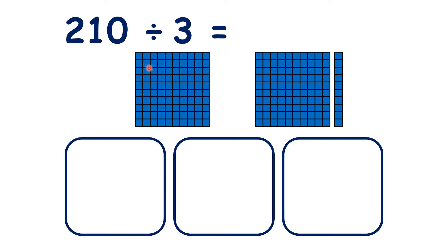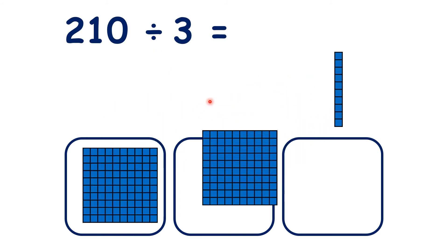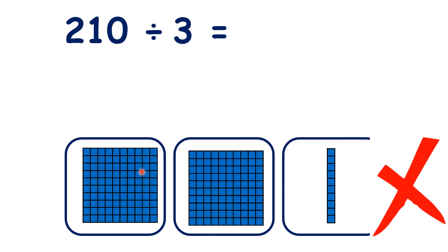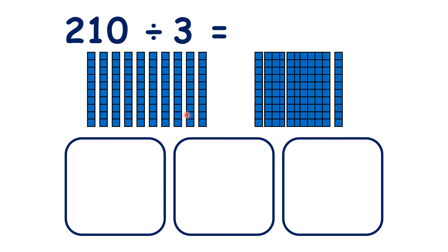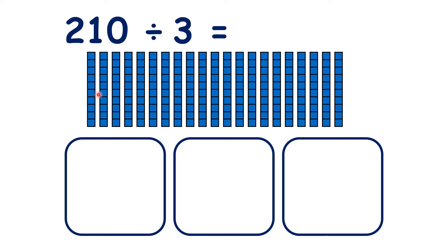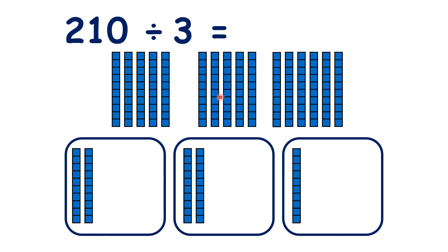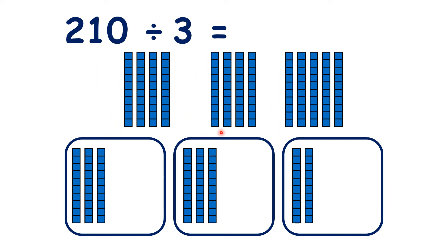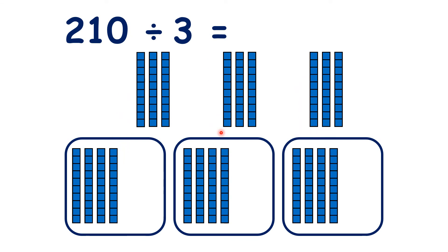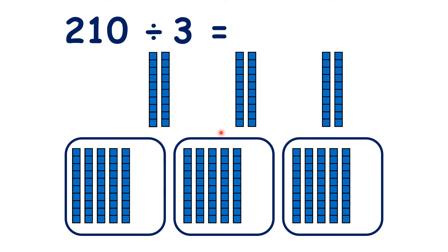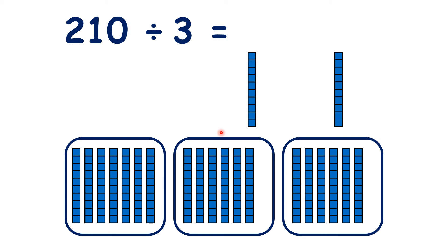We could also think of 210 divided by 3 as sharing 2 hundreds and 1 ten — so that's 210 — between 3 groups. But we know we can't share out what we have like this, because when we divide by sharing we need the same amount in each group. So instead, we need to break up each of our hundreds into 10 tens. That now gives us 21 tens altogether, and when we share out those 21 tens we have 7 tens in each group. So 210 divided by 3 is 70.